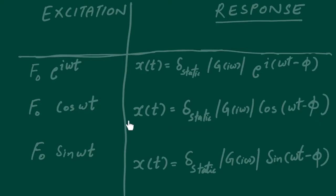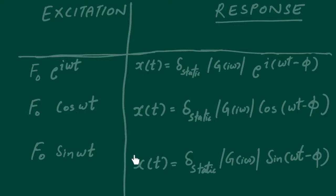On a similar note, if the excitation assumes the functional form f₀ sin(ωt), which is the imaginary part of the complex exponential term, then the corresponding response can be written as the imaginary part of the complex response — giving us delta-static times |G(iω)| times sin(ωt − φ). That is the advantage of working with complex exponential notation.